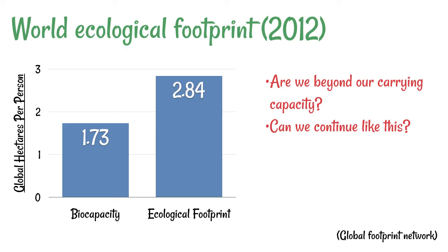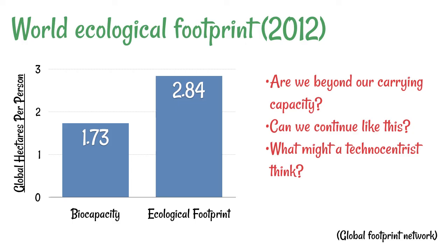But let's try and provide a slightly balanced argument about that. Let's think about what a technocentrist might think. Is it possible that as we've got more people on Earth we are going to come up with more technology and more methods to grow things in smaller areas, which would mean the biocapacity and our ecological footprints would actually change?